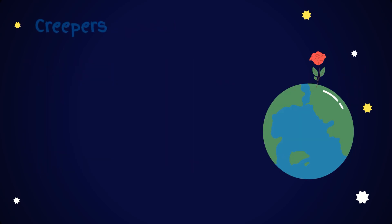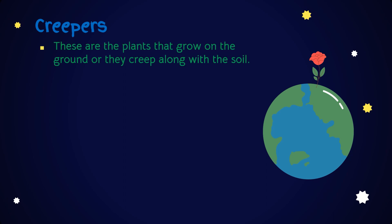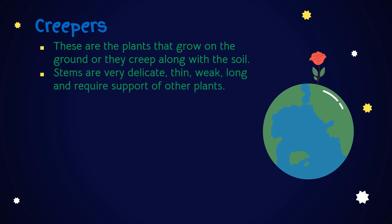Creepers are plants that grow on ground, or they creep along the soil. Stems are very delicate, thin, weak and long, and require the support of other plants. Examples: watermelon and pumpkin.